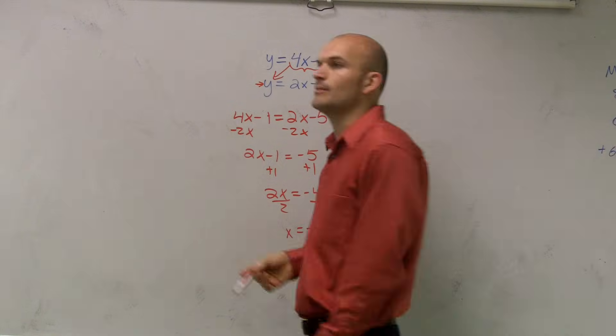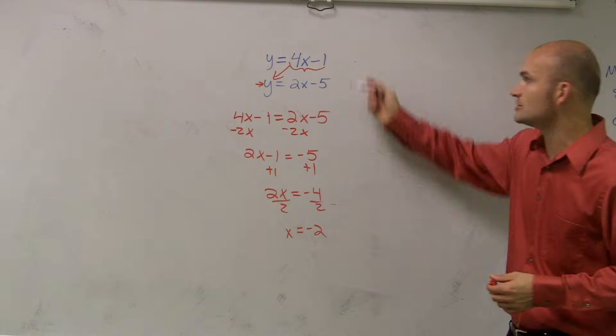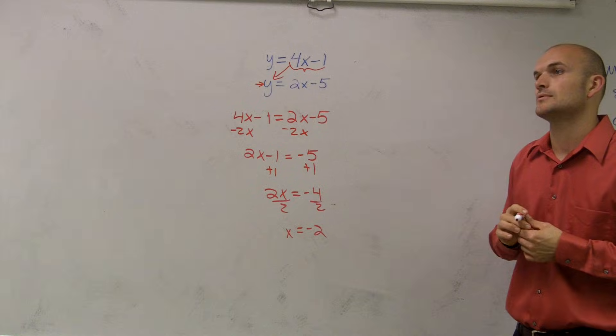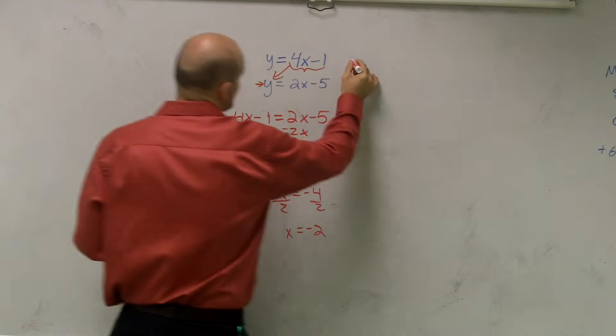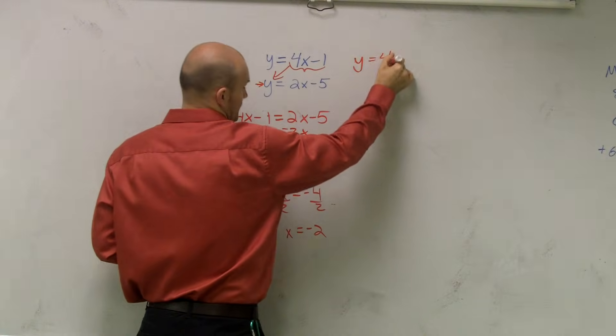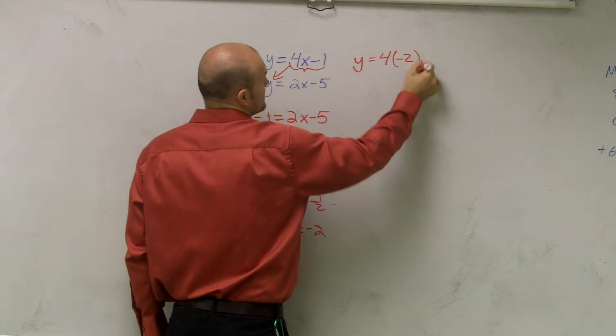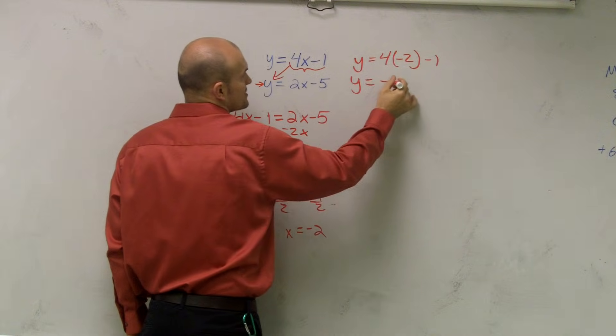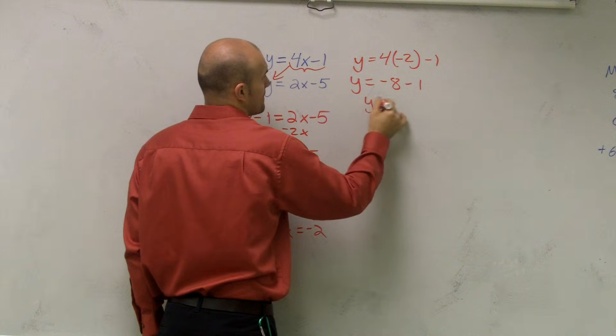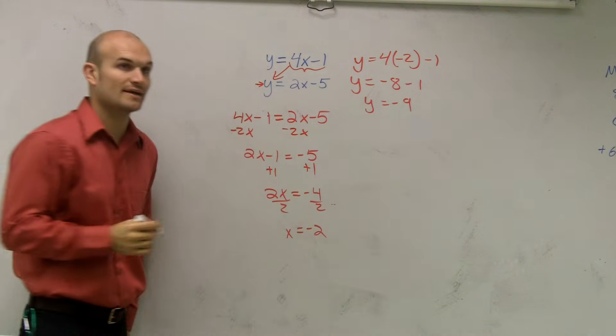So just pick one, either top or the bottom. Alex, which one do you want to put in? Top equation or the bottom equation? Top equation. There we go. So let's say y equals 4 times negative 2 minus 1. y equals negative 9.